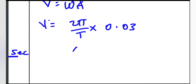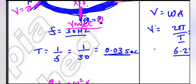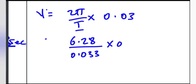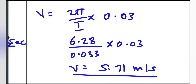Omega equals 2π over T. So velocity equals 2π over T times amplitude, which is 6.28 over 0.03 times 0.03, giving approximately 6.28 meters per second — roughly 6.28 m/s.